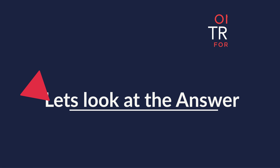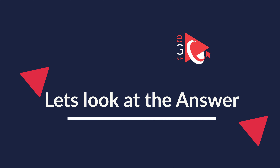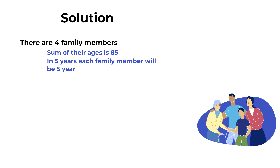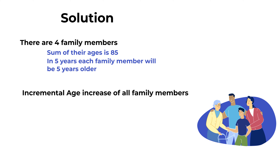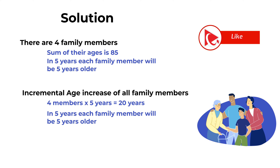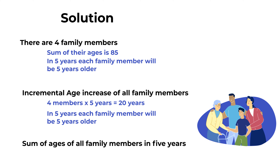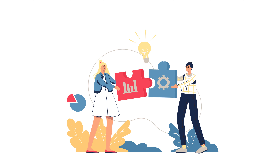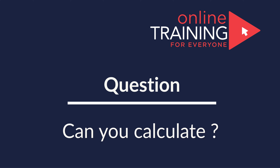This problem is simpler than you think — the key is not to overthink it. There are four family members whose ages sum to 85. In five years, each member will be five years older, so the incremental age increase is 4 × 5 = 20 years. The new sum is 85 + 20 = 105. The correct choice is D, 105.